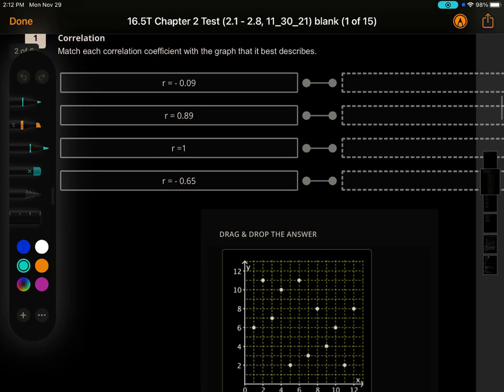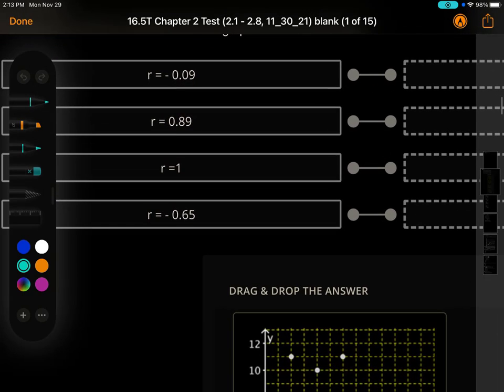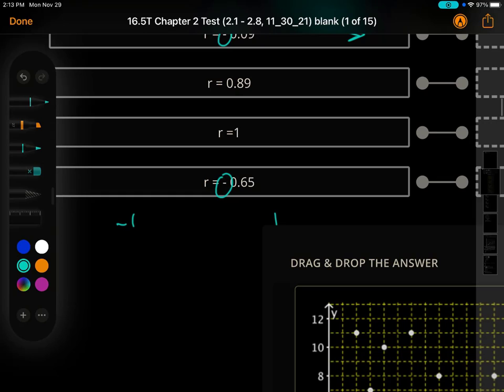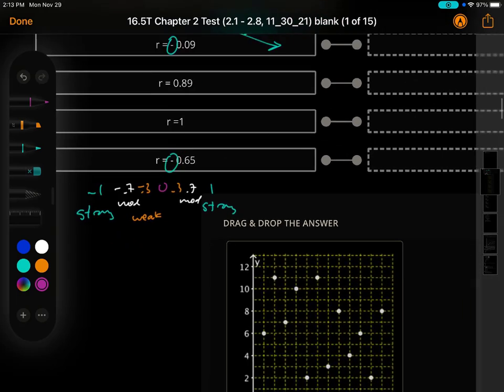Match each correlation coefficient with the graph that best describes it. The first thing I want to point out is make sure you understand if it has a negative, that means going this way, that's called a negative slope. The number that went closer to one or negative one, these are stronger, and then you might get to something like moderate, like 0.7 or negative 0.7. Then like 0.3 or negative 0.3 is weak. And at 0, it's none, no correlation.